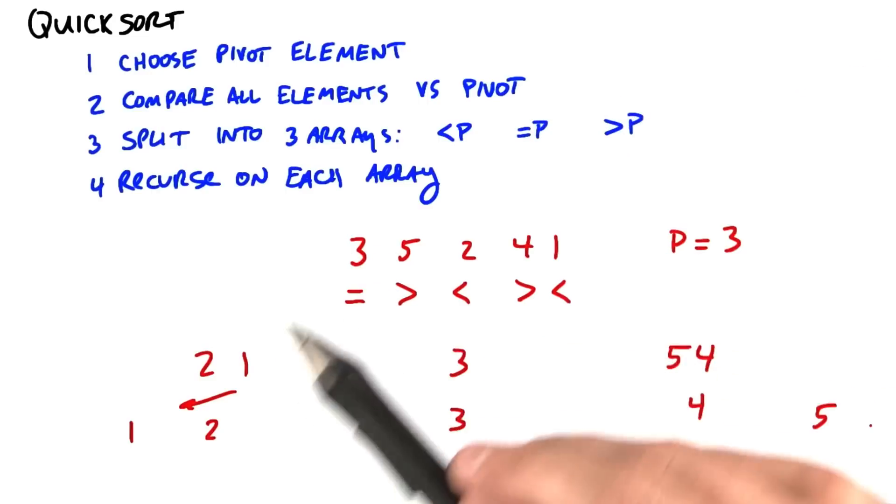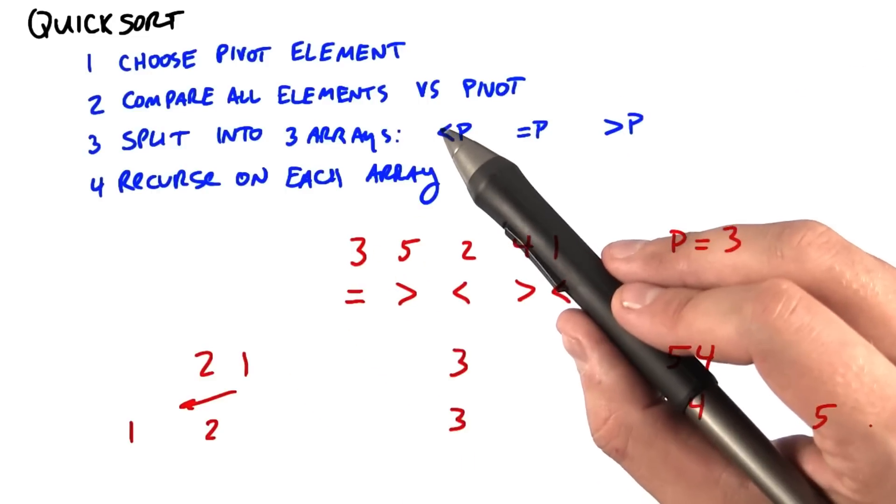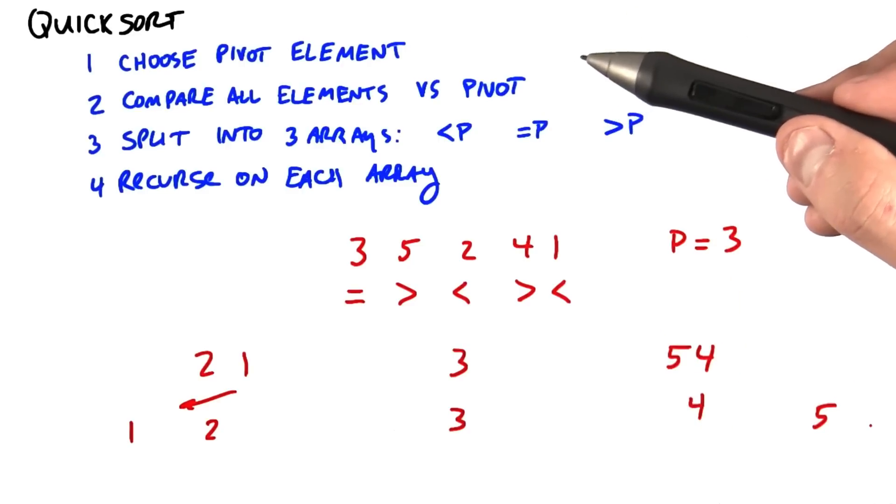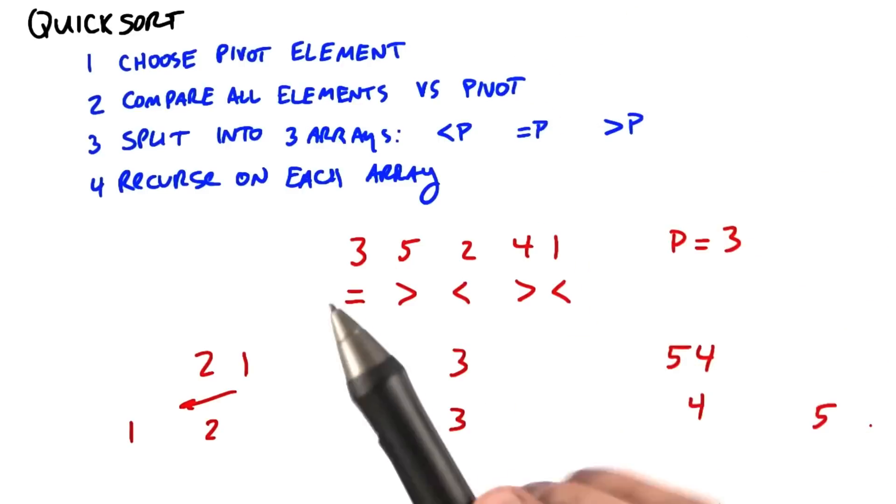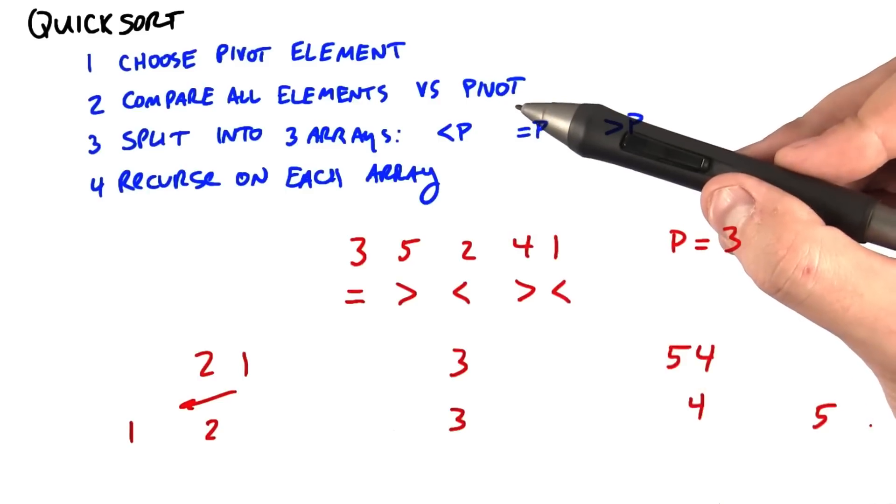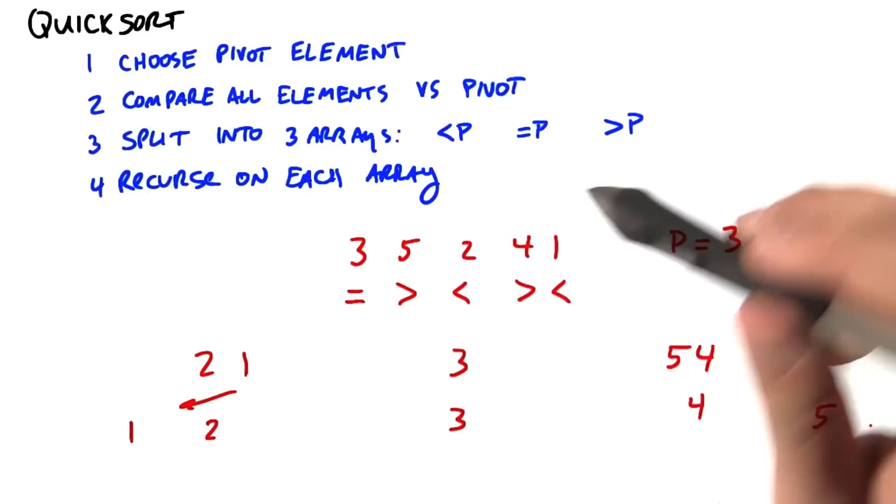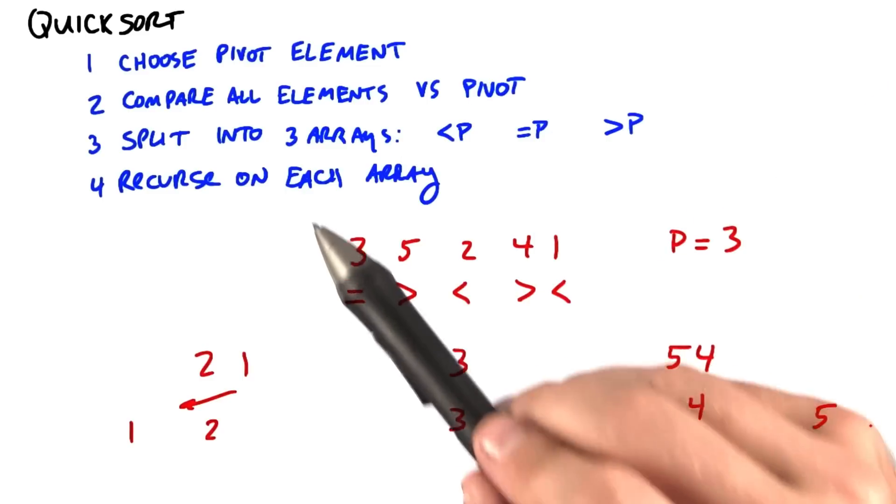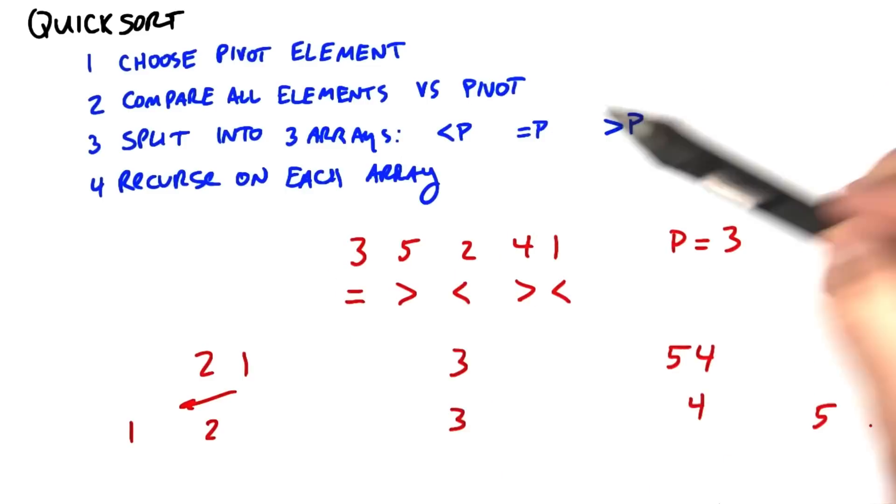So how can we take this seemingly recursive-only algorithm and map it to the GPU using the primitives that we've learned? So I'm bringing up this example for two reasons. The first is that you have already learned all the pieces that you need to implement quicksort on the GPU. And the second is to motivate the benefits of new GPU capabilities that do natively support recursion.